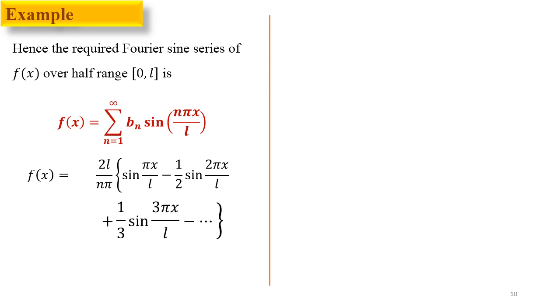In this way we understand how to obtain the Fourier sine series and Fourier cosine series for the same function f(x) = x. Thank you for watching this video. I hope it makes clear the use of half-range Fourier series on a function f(x), also known as the sine series or cosine series.